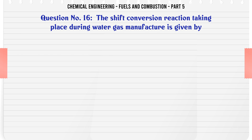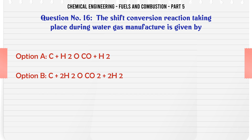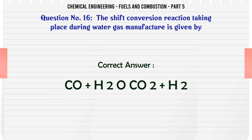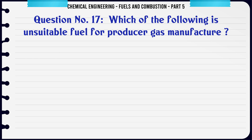The shift conversion reaction taking place during water gas manufacture is given by: A. CO + H₂O → CO₂ + H₂. B. C₂H₂ + CO₂ → 2H₂. C. CO₂ + 2H₂. D. None of these. The correct answer is CO + H₂O → CO₂ + H₂.